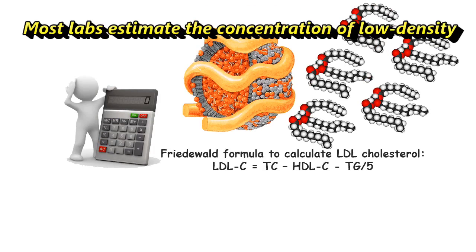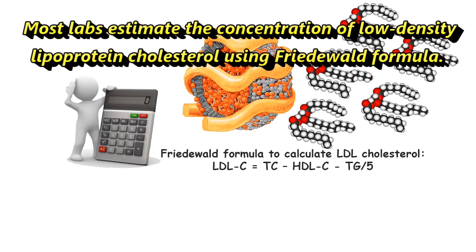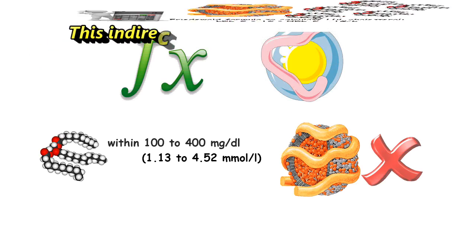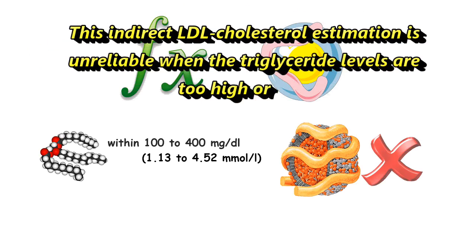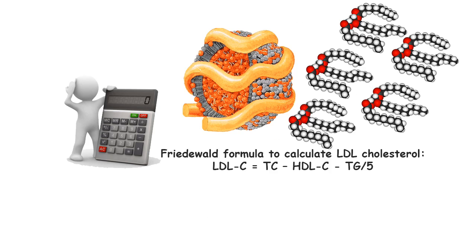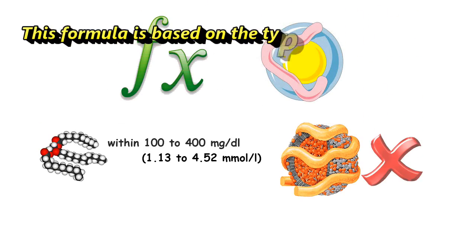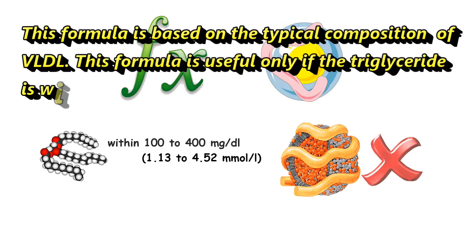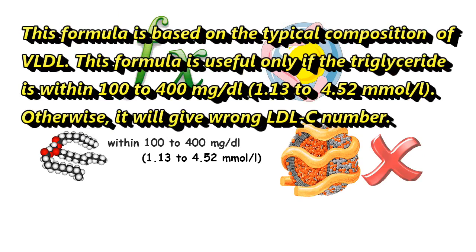Most labs estimate the concentration of LDL cholesterol using the Friedewald formula. This indirect LDL cholesterol estimation is unreliable when triglyceride levels are too high or too low. The Friedewald formula to calculate LDL-C is: LDL-C = TC − HDL − (TG ÷ 5). This formula is based on a typical composition of VLDL and is only useful when triglycerides are within 100 to 400 milligrams per deciliter; otherwise it will give a wrong LDL-C number.